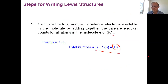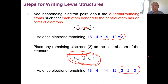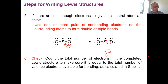Let me recap the steps briefly. First, count the total number of valence electrons (18 for SO2). Second, draw the skeletal with central and surrounding atoms, bond them with single bonds, and subtract electrons used. Third, satisfy the surrounding atoms' octets by adding electrons and subtract those used. Fourth, place remaining electrons on the central atom. Fifth, if the central atom is unsatisfied, borrow non-bonding electrons from surrounding atoms to make double or triple bonds. Never add or remove electrons — use only the total calculated.